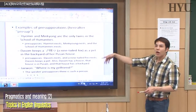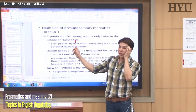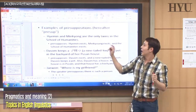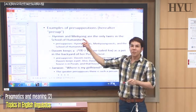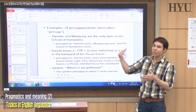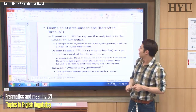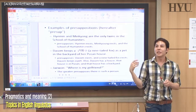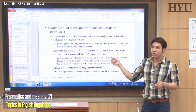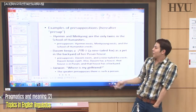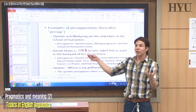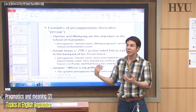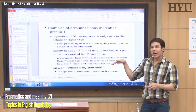Examples of presuppositions: 'He Min and Min Kyung are the only twins in the School of Humanities' — this presupposes that He Min and Min Kyung exist, and that the School of Humanities exists. 'Tassom keeps a Gumiho as a pet in the backyard of her Pusan house' — this presupposes that a person named Tassom exists, that a Gumiho exists in reality, she has a pet, she has a house in Pusan, and she has a backyard.